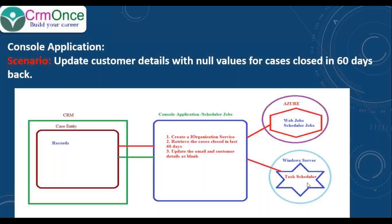I'm going to explain a simple scenario using console applications. The scenario is: you want to update customer details with null values for cases that were closed 60 days ago. The flow is: in CRM we have a Case entity with records. In the console application, you write the logic to handle this.